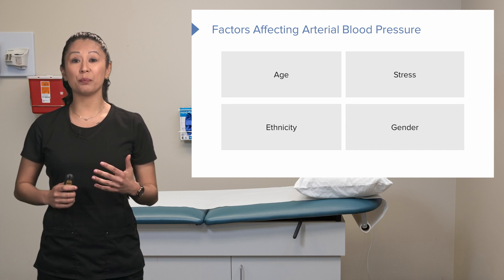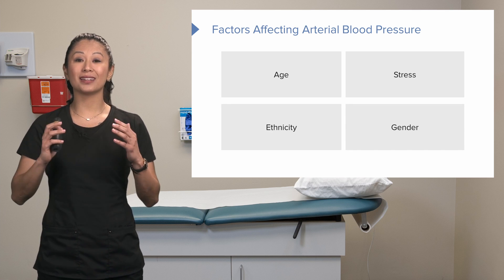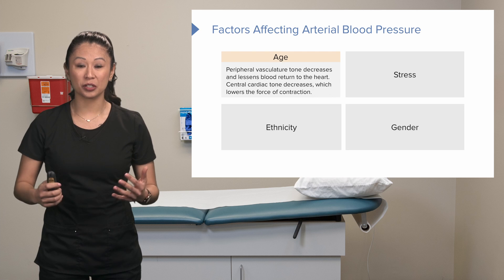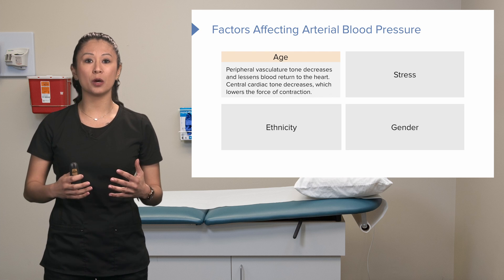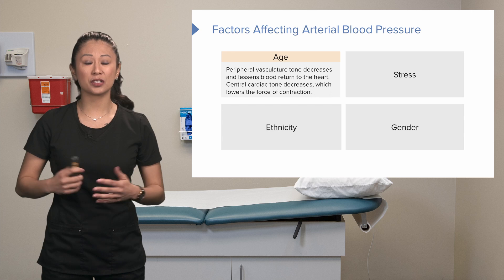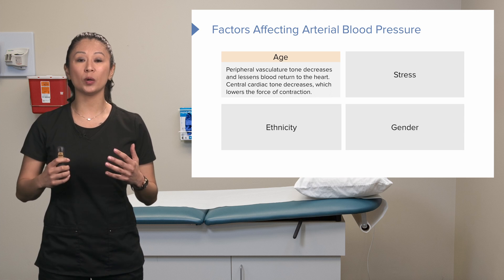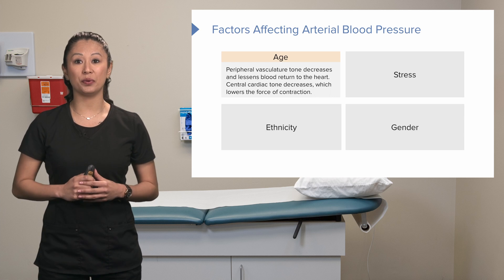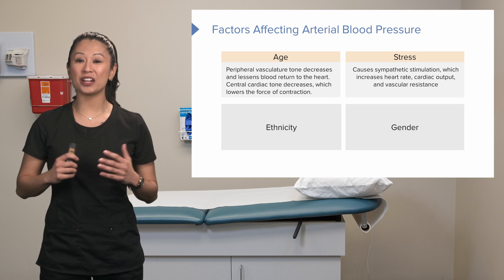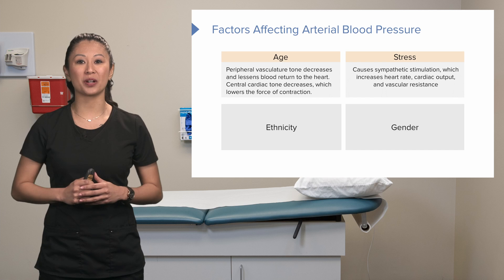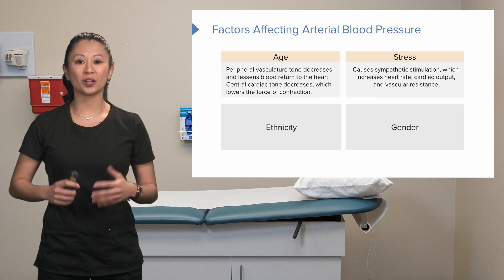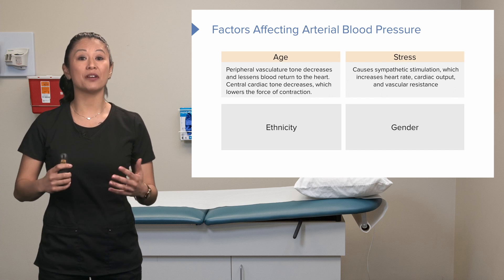There are many factors that can affect blood pressure. Starting with age: over time, peripheral vascular tone decreases, lessening blood return to the heart, and cardiac tone can decrease as well, lowering the force of contraction and cardiac output. Stress stimulates the sympathetic system — that fight-or-flight response — which in turn can increase heart rate, cardiac output, and vascular resistance. Ethnicity can also predispose someone to hypertension, even if they're doing everything right with diet and lifestyle.